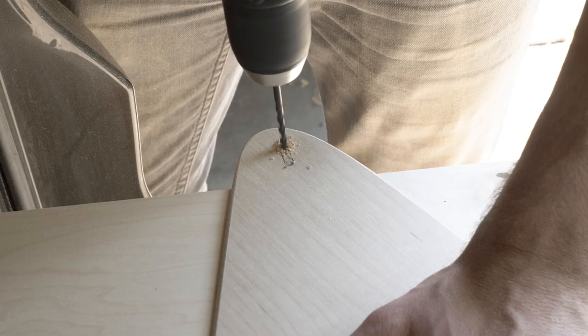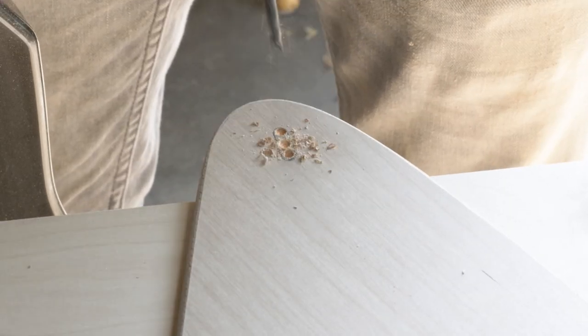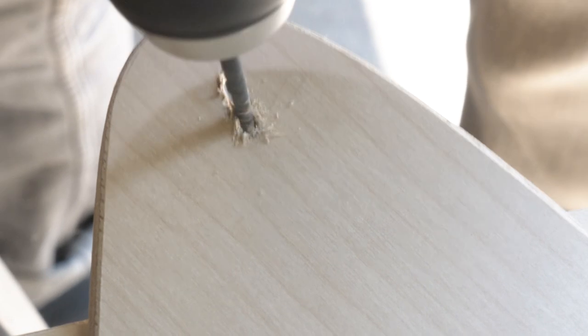To get it to slide back and forth, I first made a slot in the wood by drilling four holes in a line, then wiggling my drill around like a total amateur.